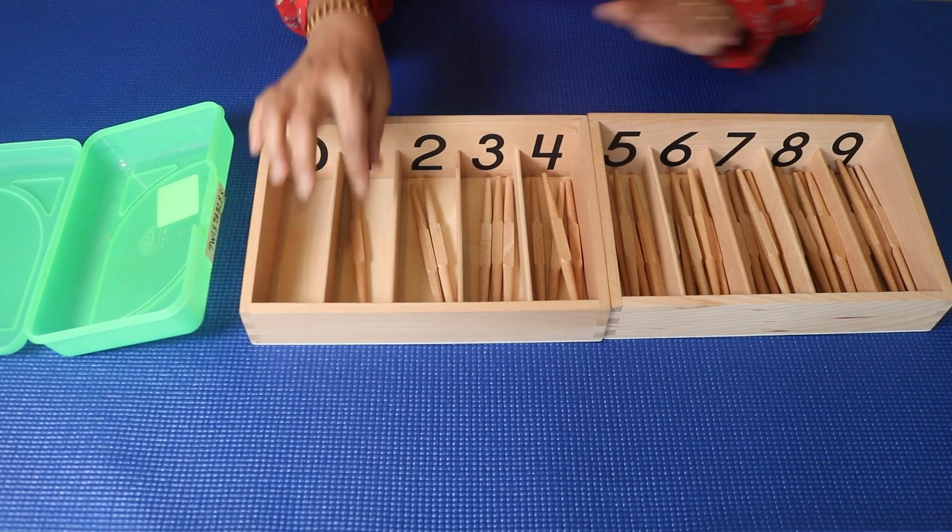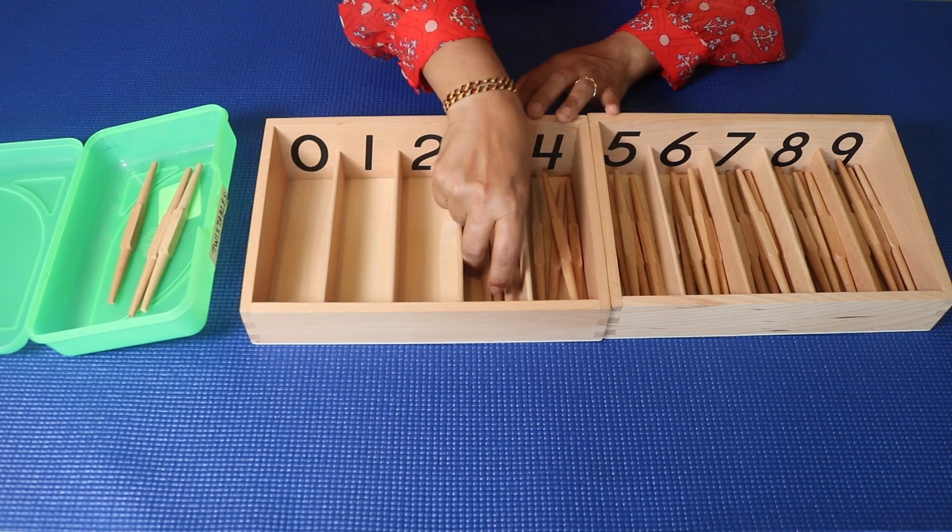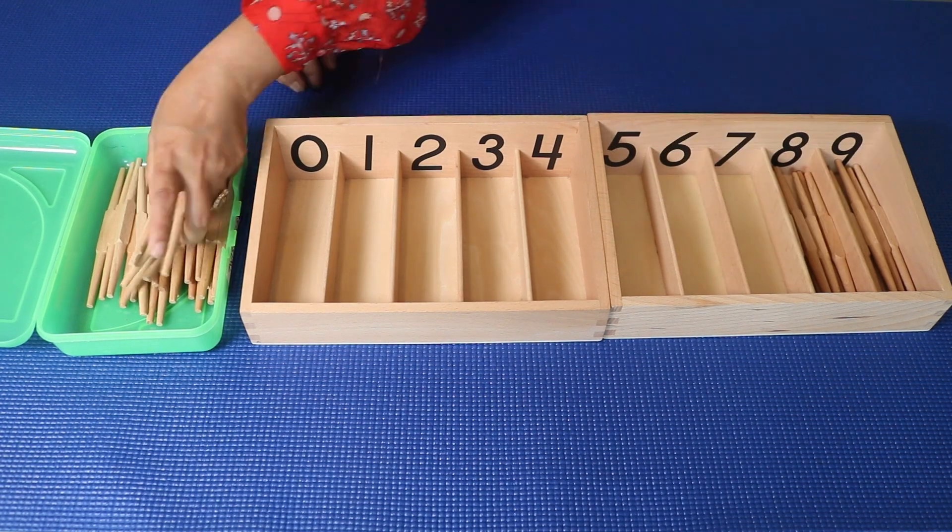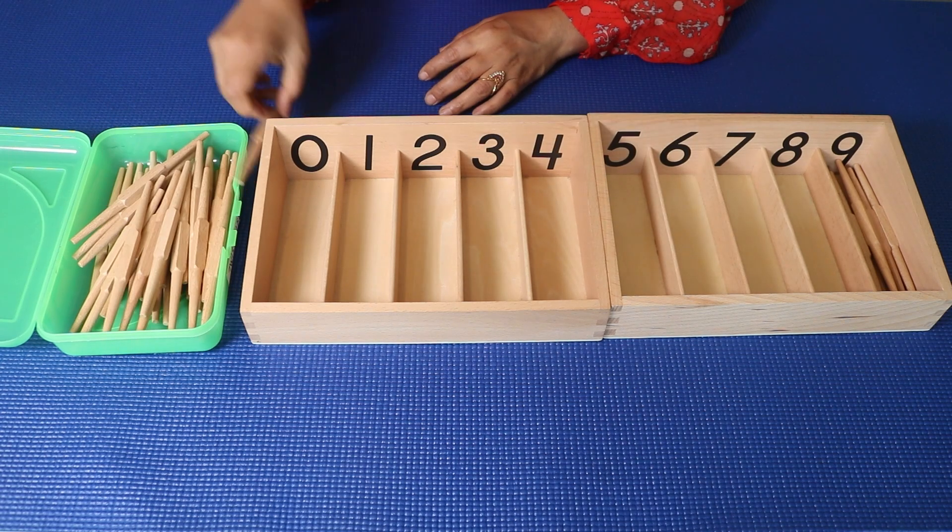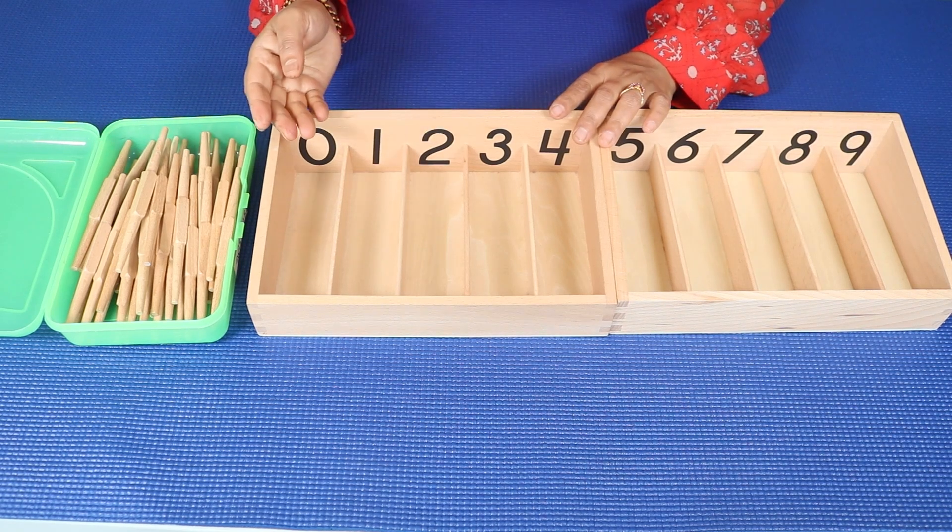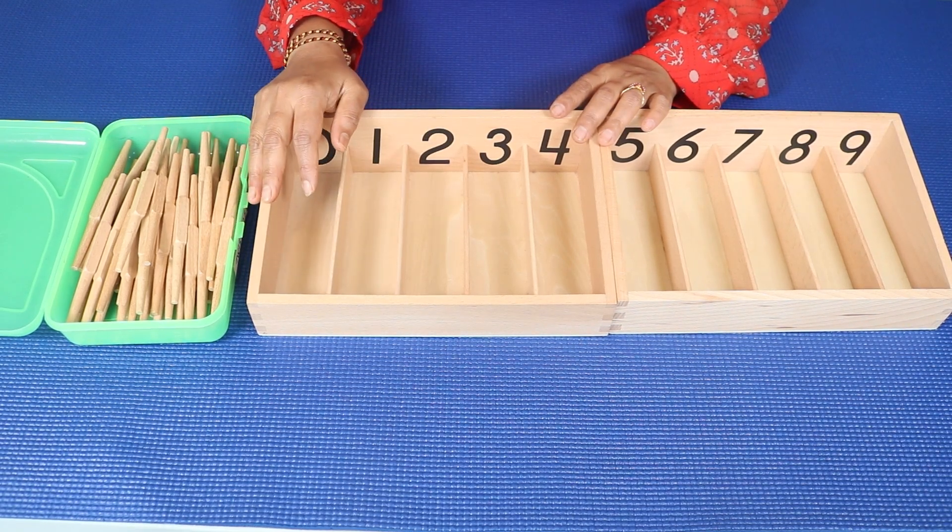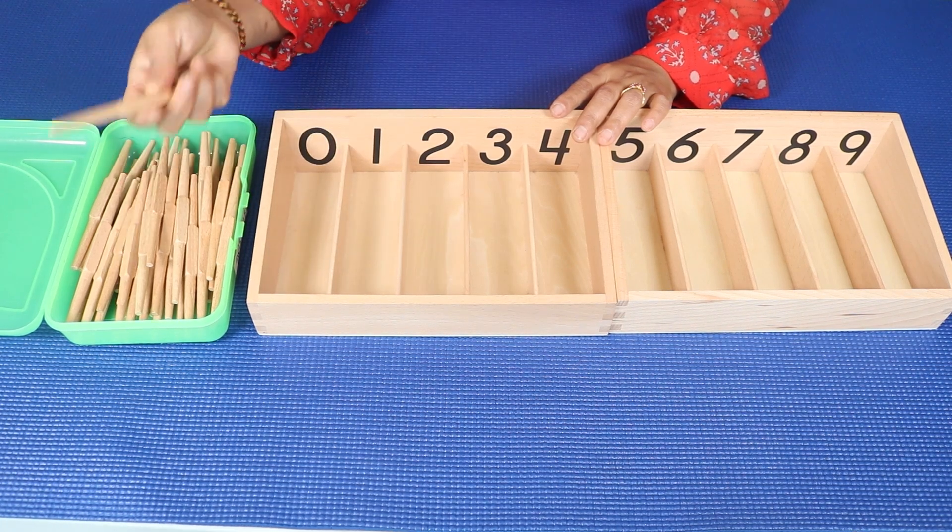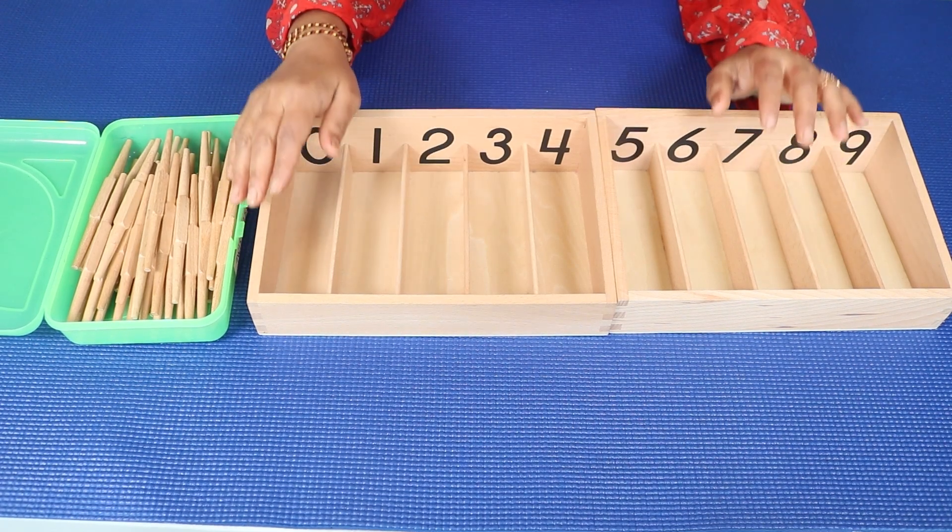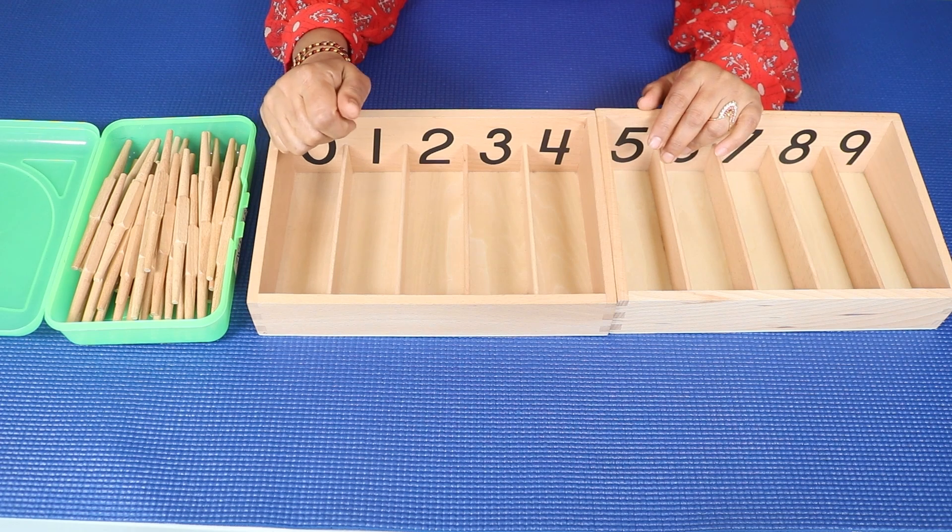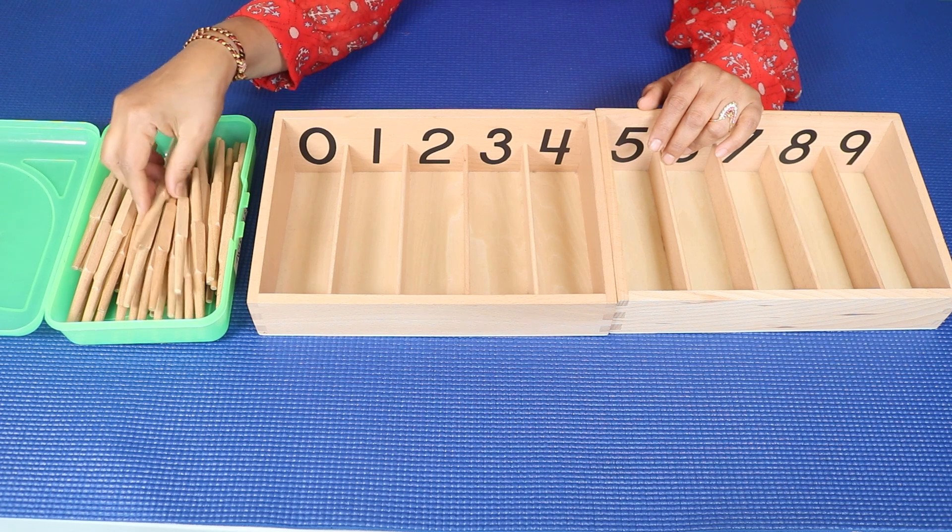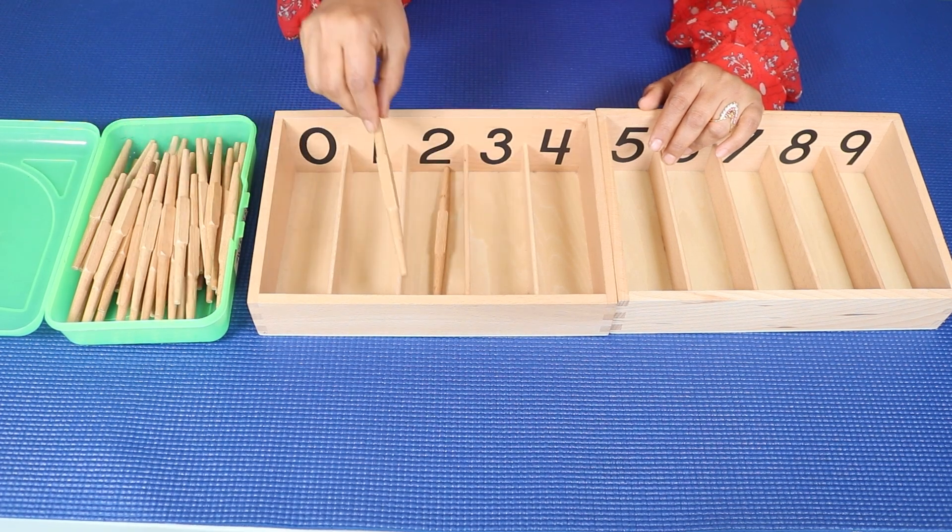Now you can ask your child to clean up, one by one. If you don't have the actual material, you can use small baskets which are available in dollar stores, and in those small baskets you can use pencils or crayons instead of spindles. Also, if you want those wiggles out from your child, you can place these spindles across the room and ask your child to walk up to the spindles, bring the spindles one by one, and place the spindles in the spindle box.